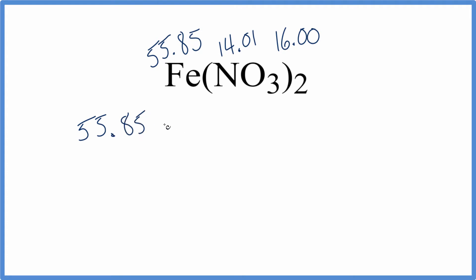Plus, and let's use the parentheses like we have in the formula. We'll put a parentheses, nitrogen is 14.01, plus oxygen is 16.00, but we have three, so three times 16.00 is 48.00. We'll close our parentheses and multiply by two.